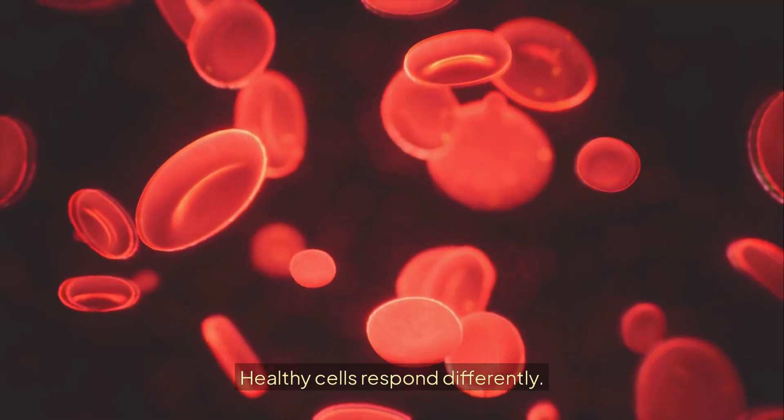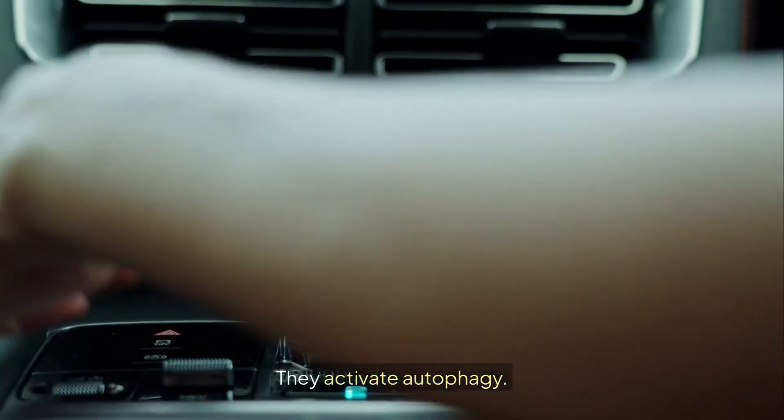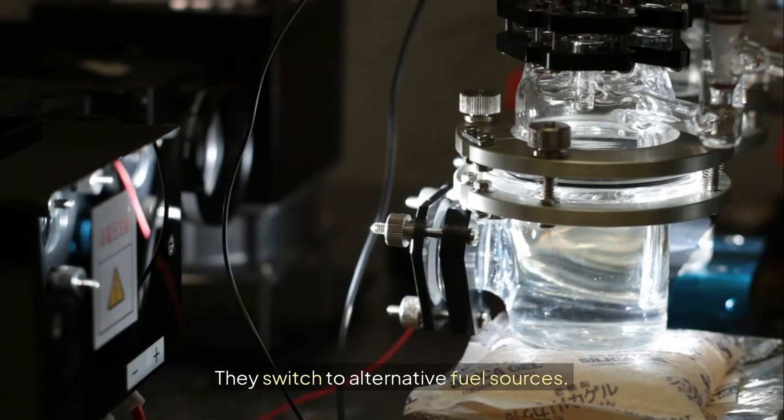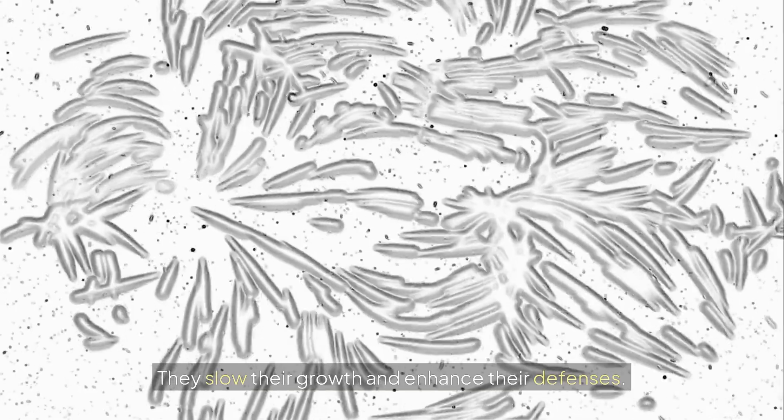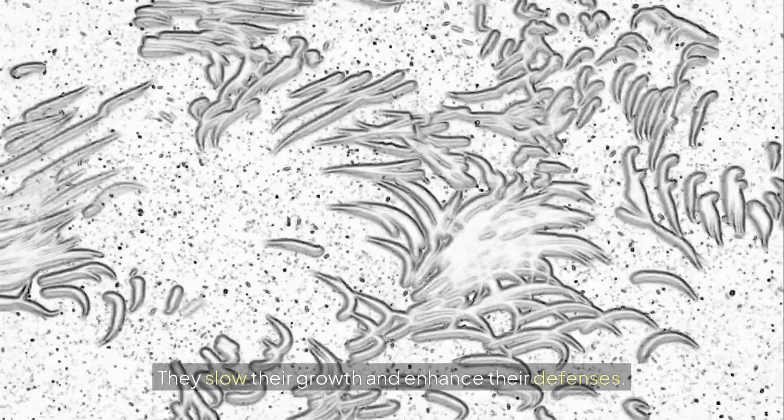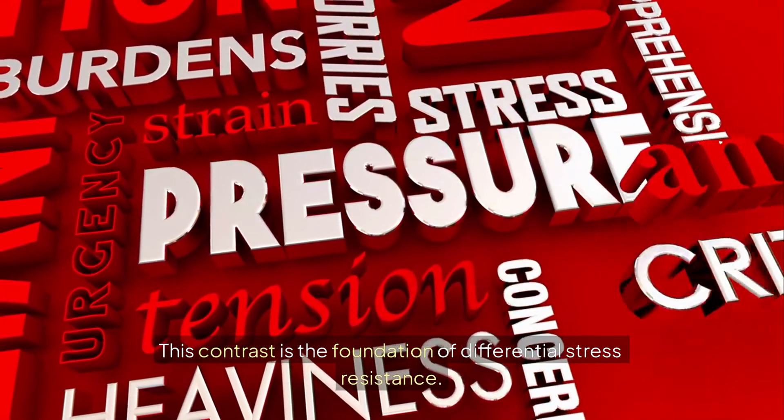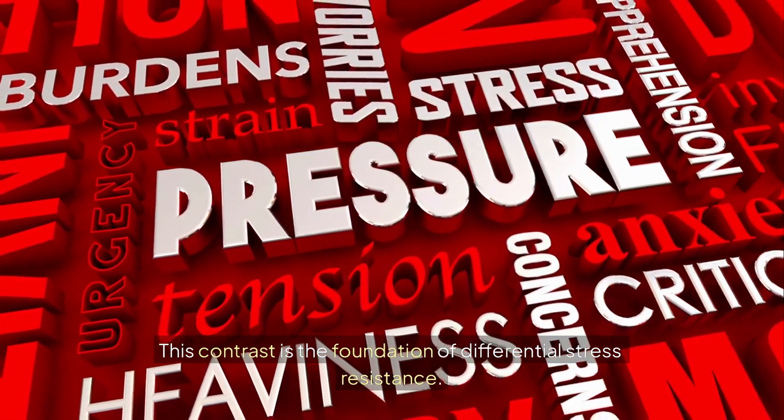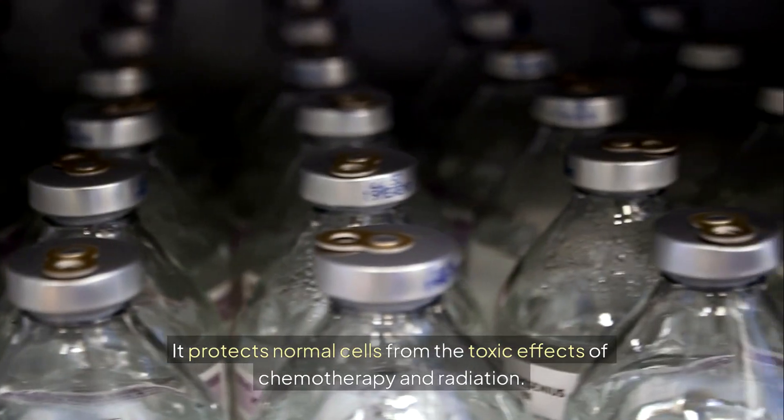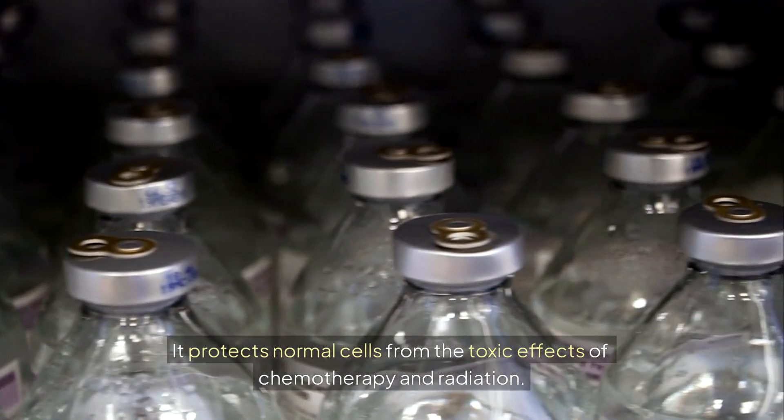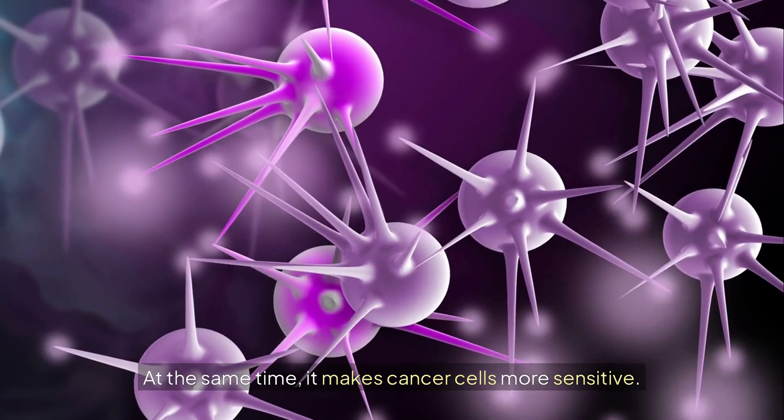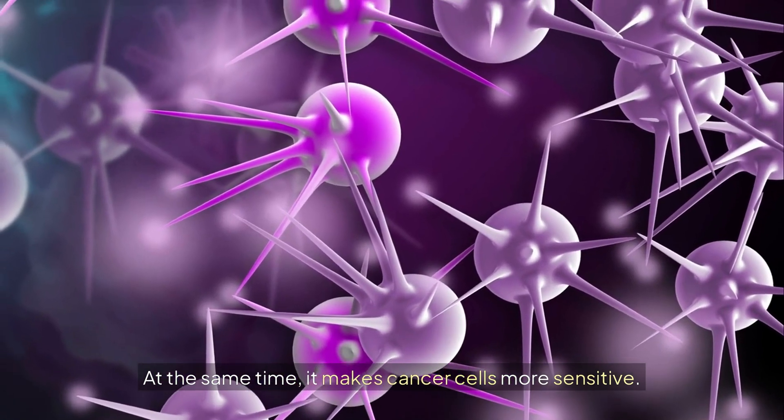Healthy cells respond differently. They activate autophagy. They switch to alternative fuel sources. They slow their growth and enhance their defenses. This contrast is the foundation of differential stress resistance. It protects normal cells from the toxic effects of chemotherapy and radiation. At the same time, it makes cancer cells more sensitive.